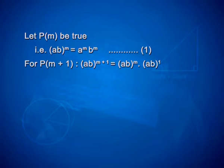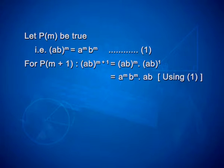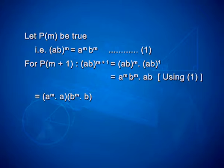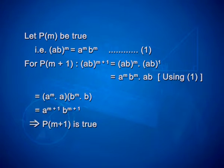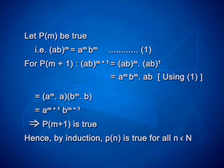For p of m plus 1: ab whole raised to m plus 1 is equal to ab raised to m into ab raised to 1, which can be simplified as a raised to m into b raised to m into ab, using the first equation. This again can be expressed as a raised to m into a, into b raised to m into b. Using laws of exponents, when the bases are same you can add the powers. So it can be expressed as a power m plus 1 into b power m plus 1. That implies p of m plus 1 is true. Hence, by the principle of mathematical induction, p of n is true for all natural numbers n.